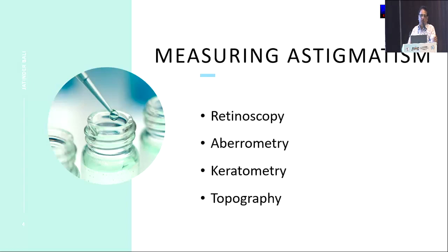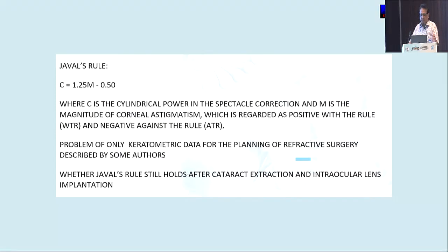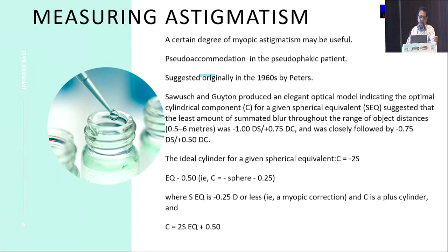Depending on how you're going to measure it, you can use different methods. Always remember that when you're using retinoscopy, it is more forgiving, and your results are going to be slightly different compared to objective keratometry or topography. Javal's rule states that with-the-rule astigmatism is better, but we still don't really know whether it holds true for cataract extraction and intraocular lens implantation.